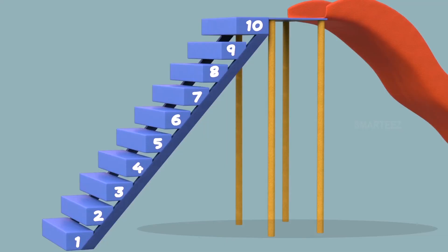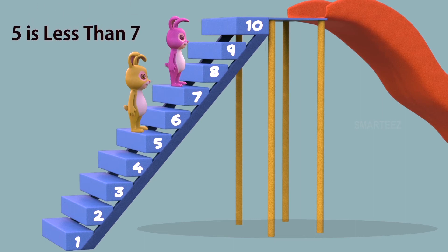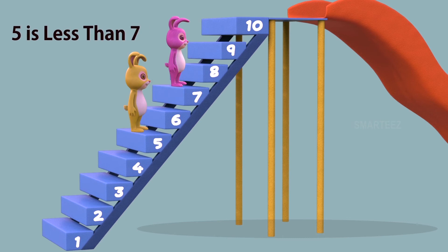Let's take a look. When the music stopped, the yellow bunny was on step number 5 and the pink bunny was on step number 7. We see step number 5 is lower than step number 7. We call this as 5 is less than 7. So, when a number is lower than some other number, we call it as less than the other number.